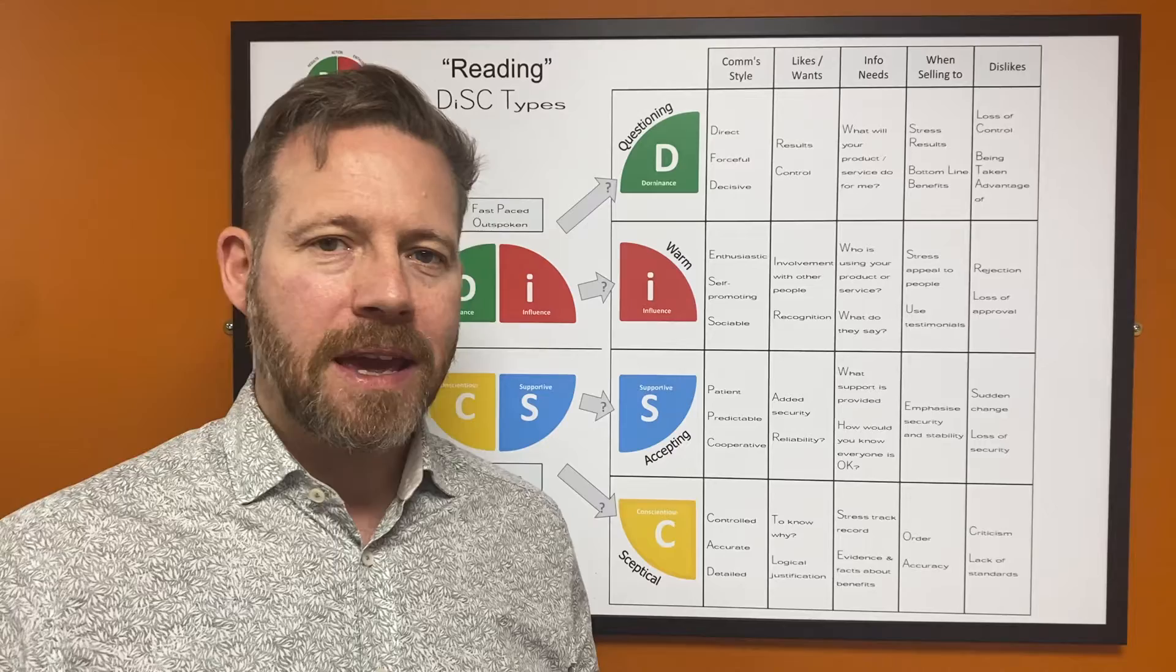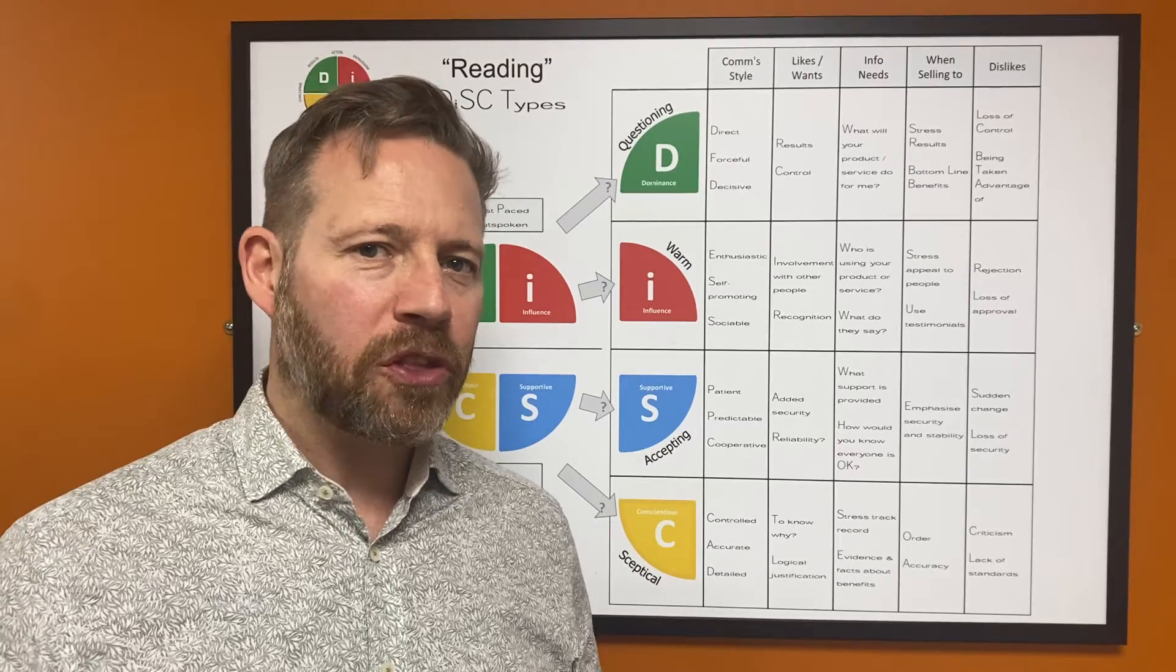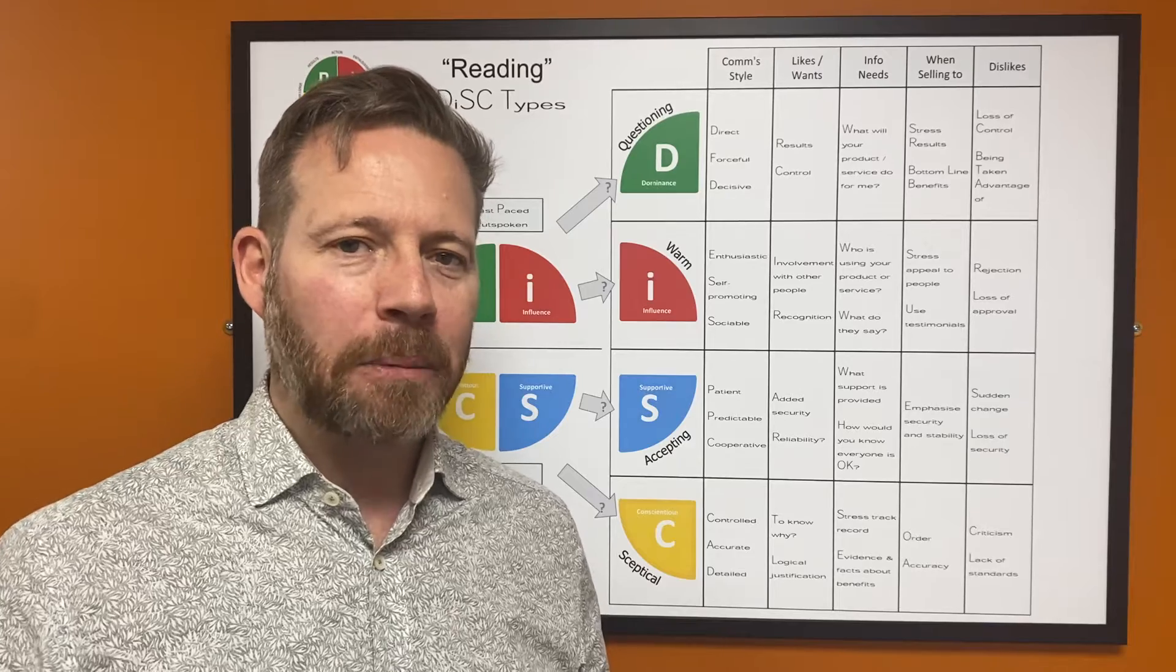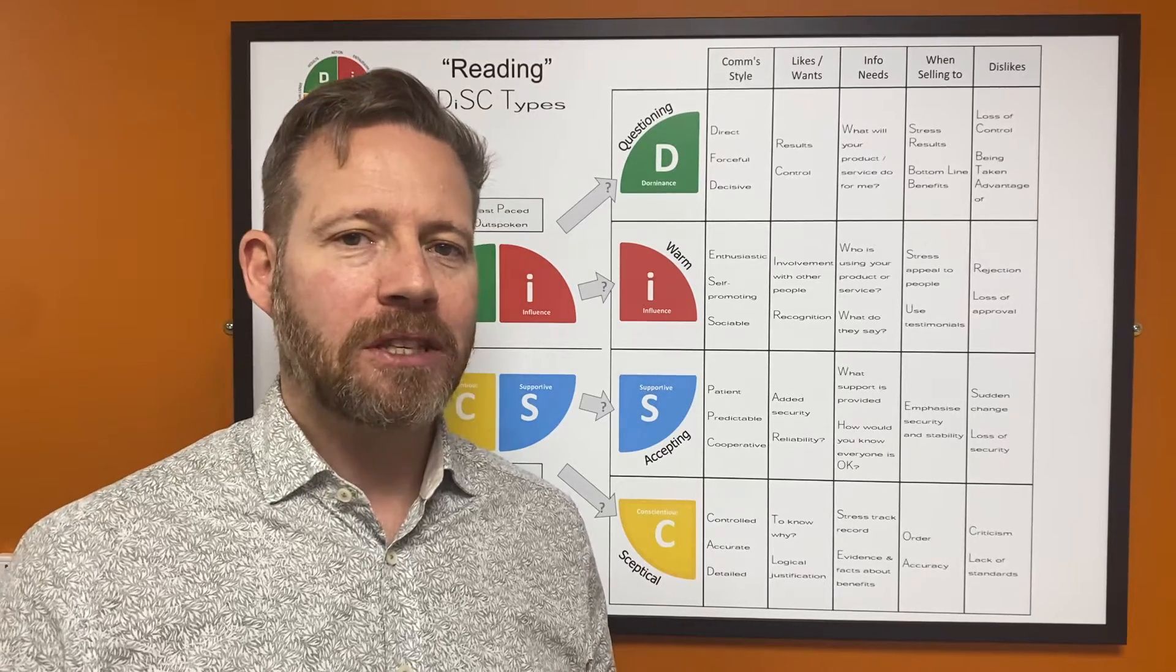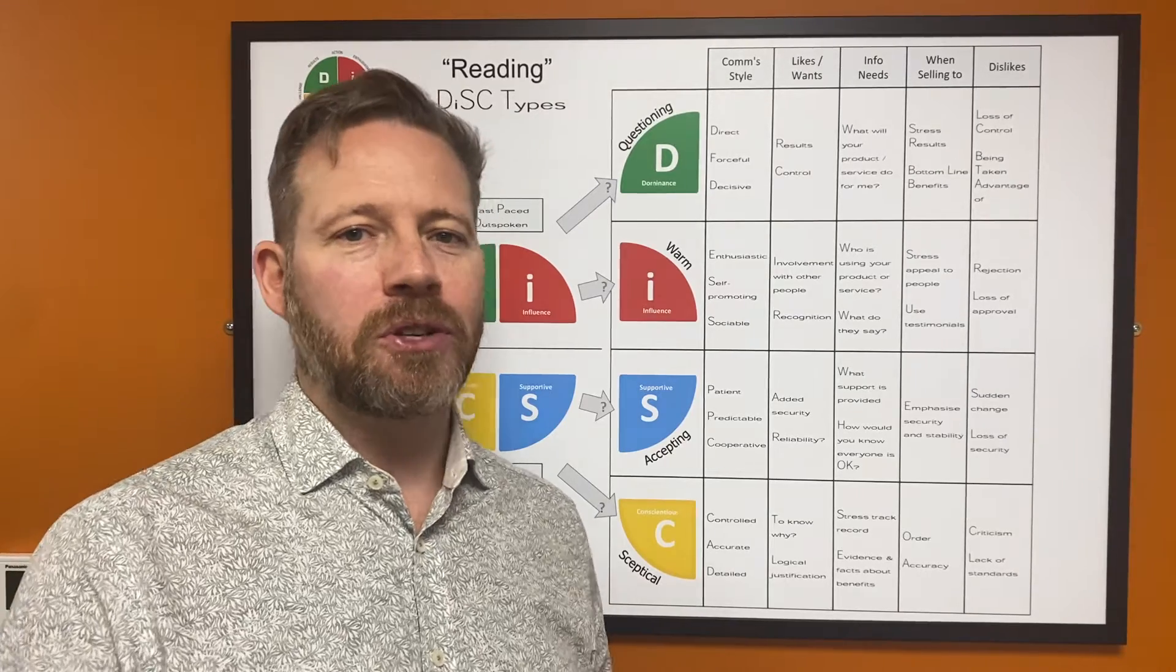What I'm going to share with you in the coming months of Ascentist TV is the methodology that we use to understand how people behave, called DISC. There are four primary reasons or four primary positions that people use to judge other people.